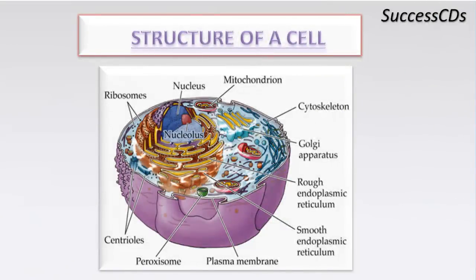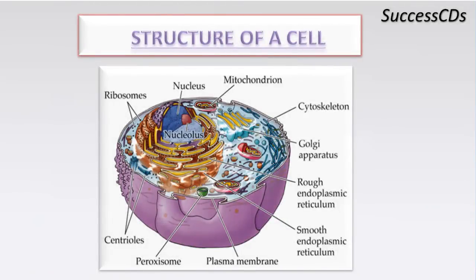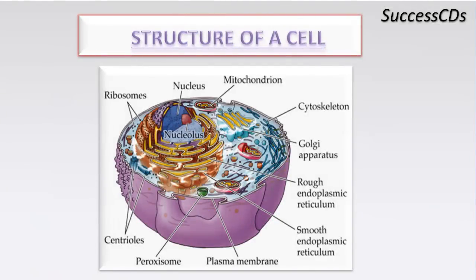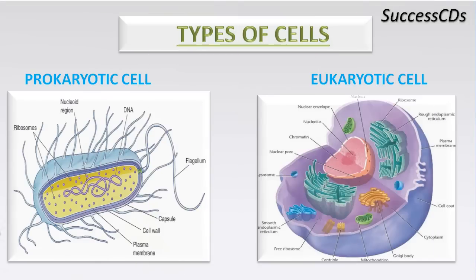Now let's see the structure of a cell. Cells are highly organized and have some specialized cell organelles. These organelles include ribosomes, nucleus, mitochondria, cytoskeleton, Golgi apparatus, rough endoplasmic reticulum, smooth endoplasmic reticulum, plasma membrane, peroxisome, and centriole. Cells are broadly classified into two types.